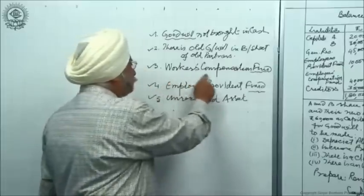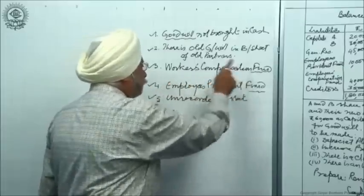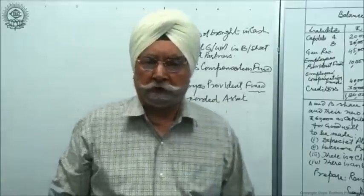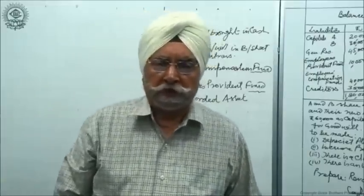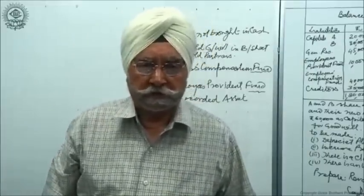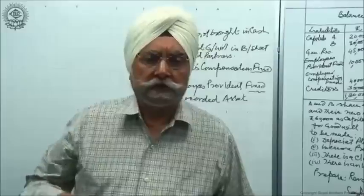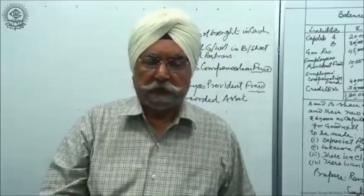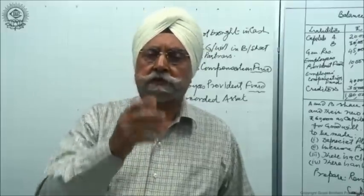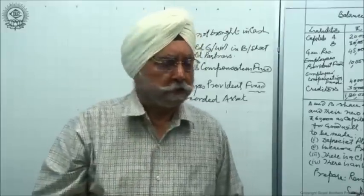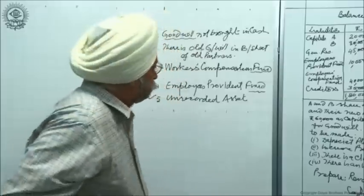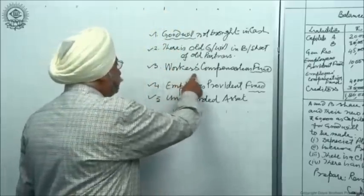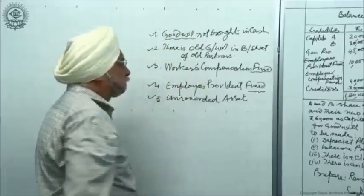The third point is the Workers' Compensation Fund. This fund has been created by the old partners to meet any contingency that arises if any worker is hurt while working in the factory, and any compensation is to be paid to that worker.